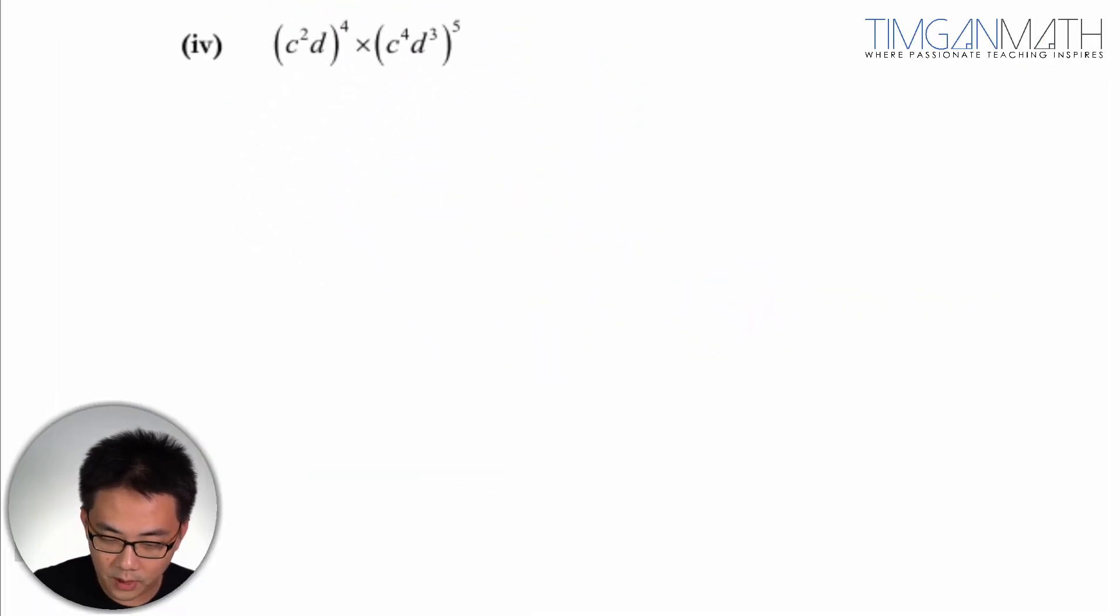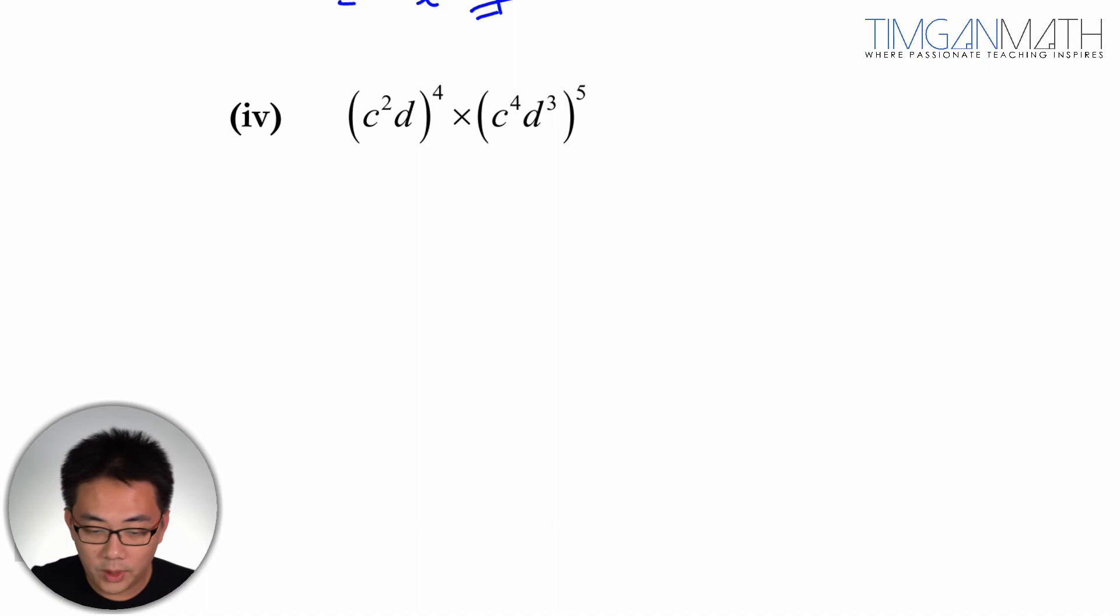Part 4. Part 4 is pretty okay. What I'm going to do is actually just going to multiply this in. So this is c to the power 2, to the power 4, and d to the power 4. Just make sure that you understand that this could multiply in, right? Each term here.